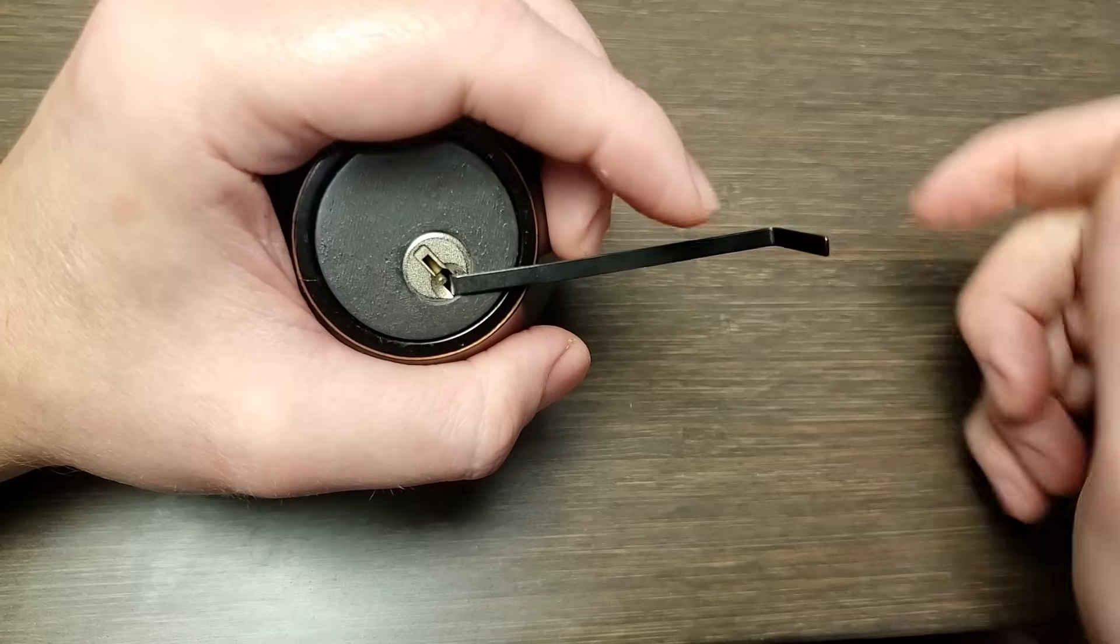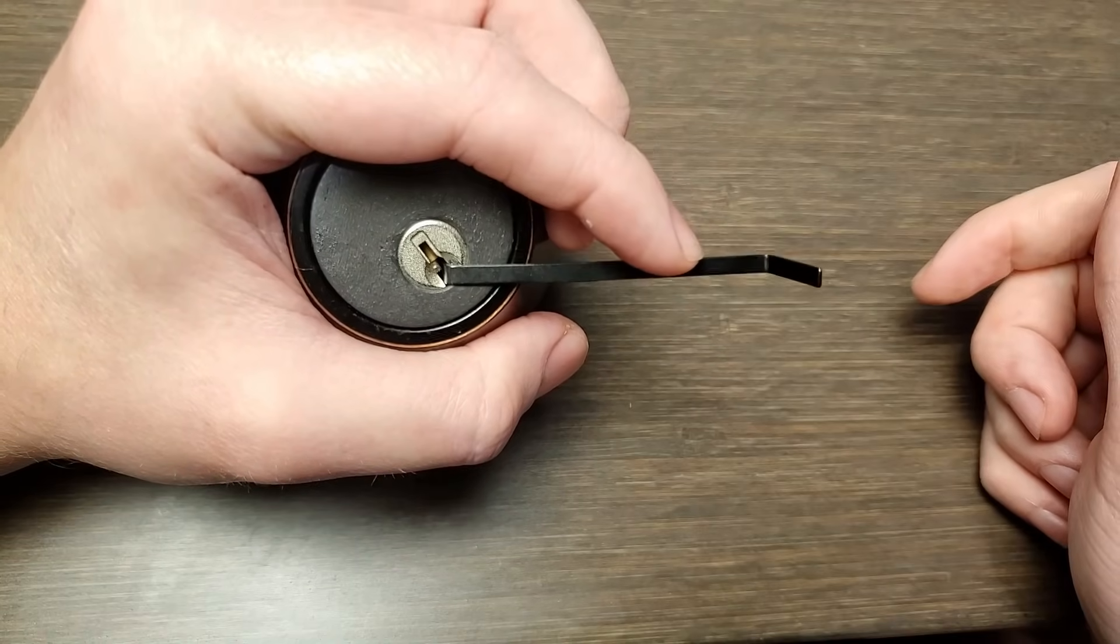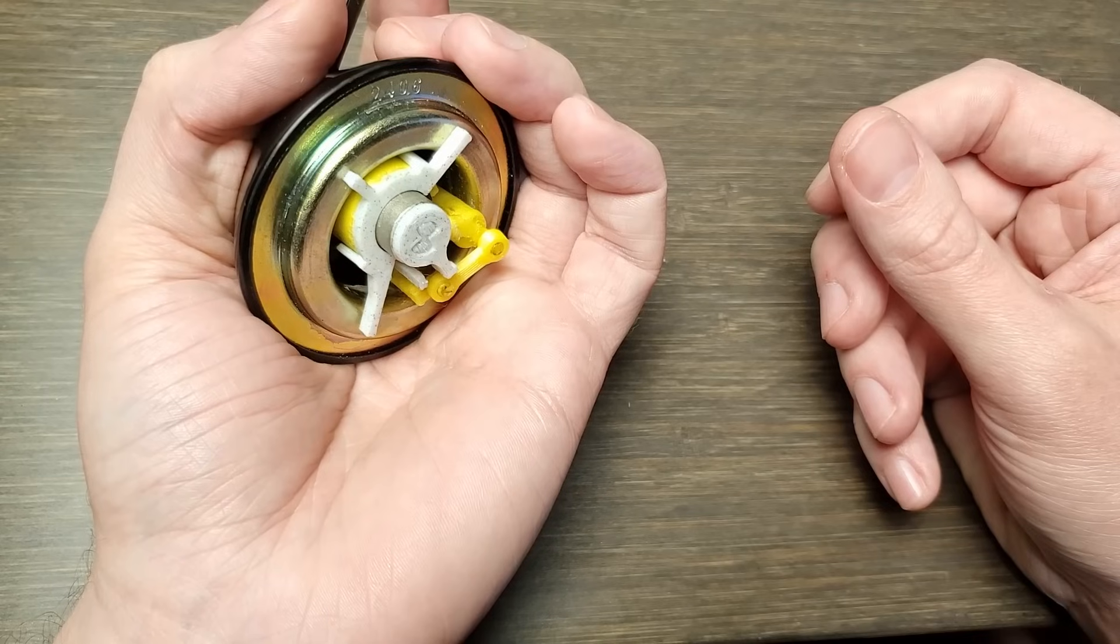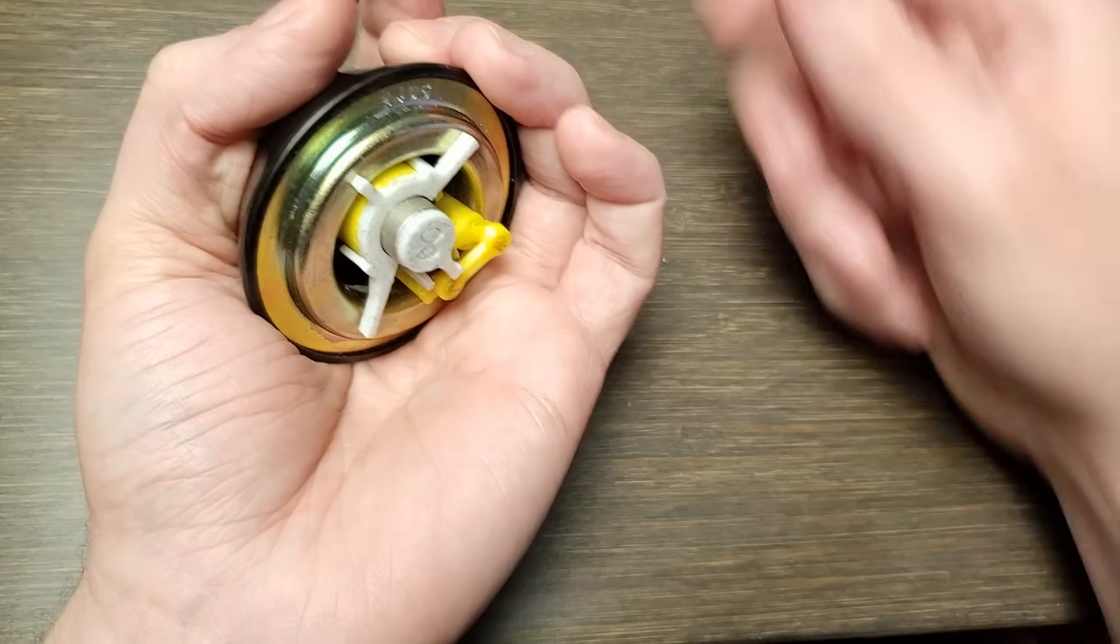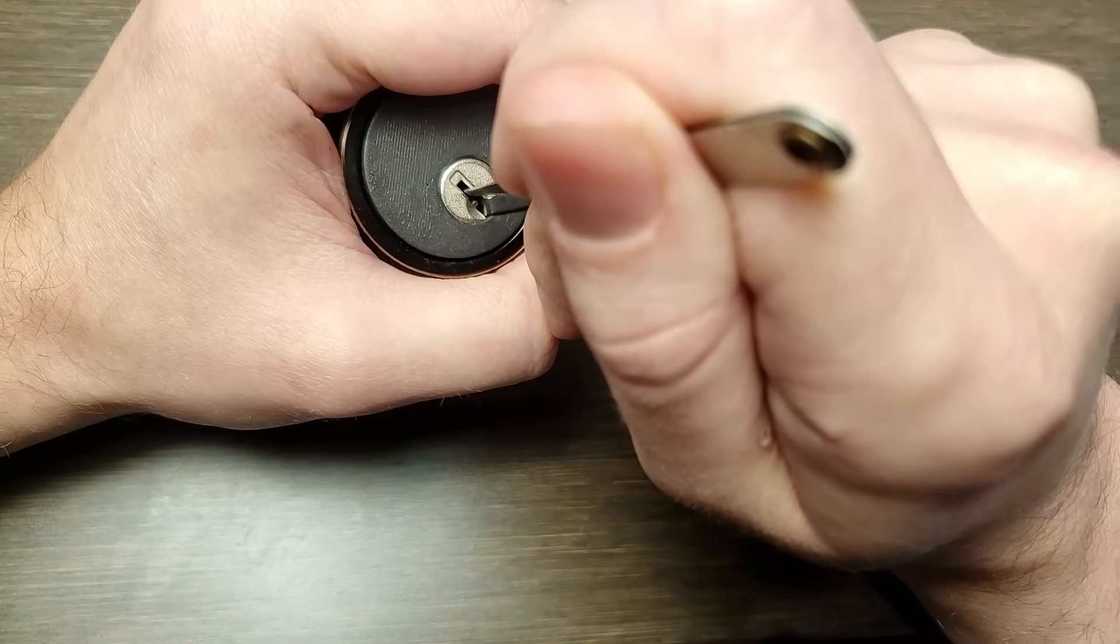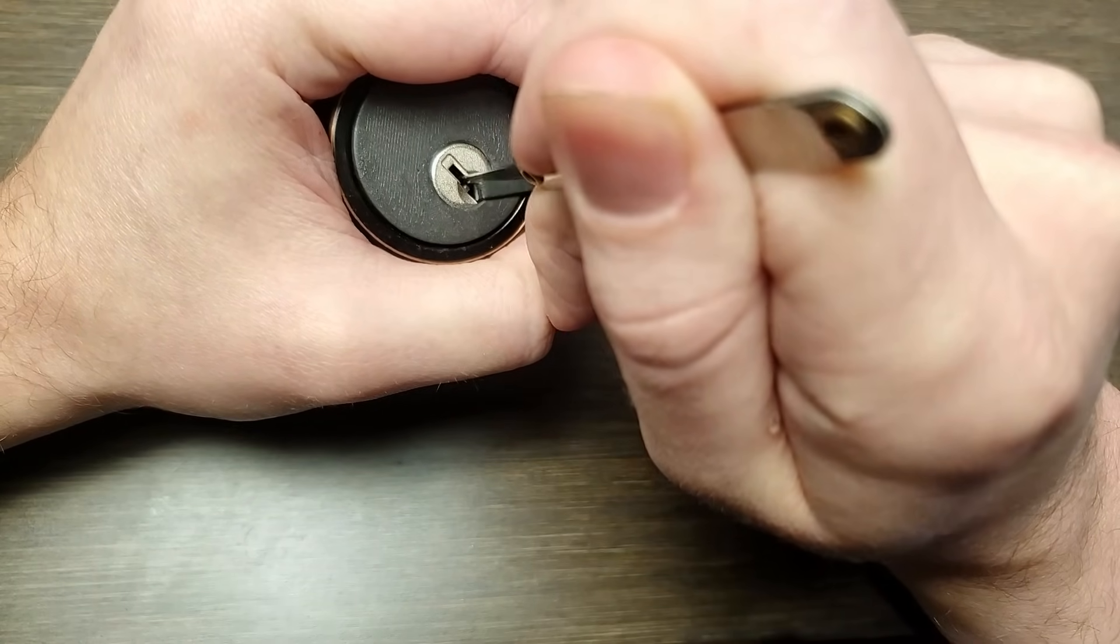Now let's try to pick it. Remember, this was pretty easy before we modified it. But this time, it was a struggle to even get started. Just the normal pressure that I used to keep the turning tool from falling out was enough to bind it up.